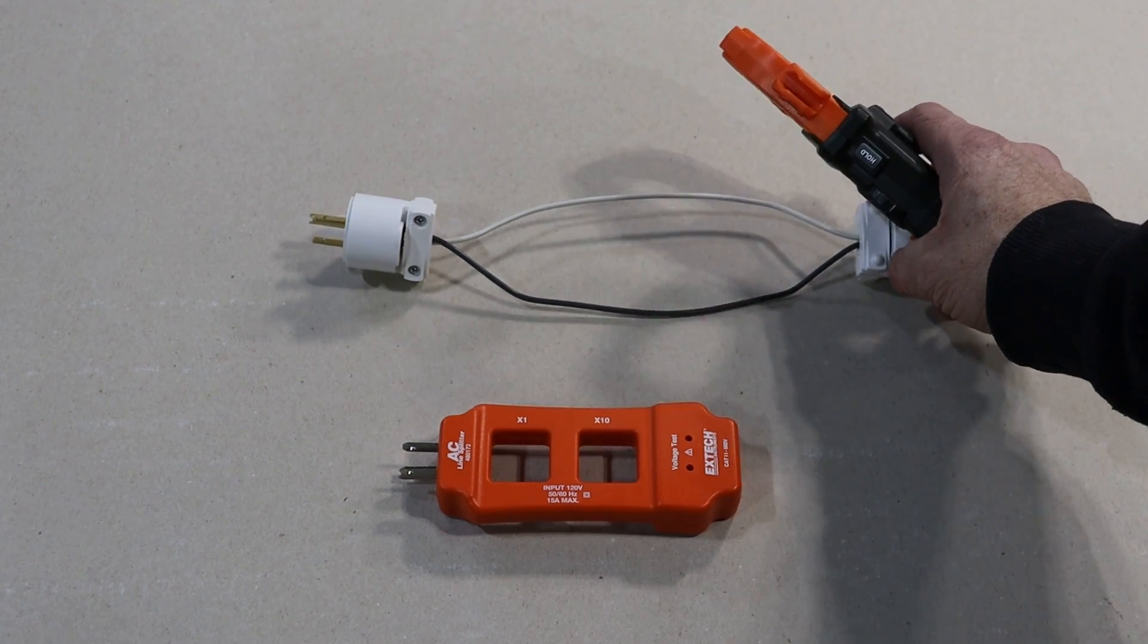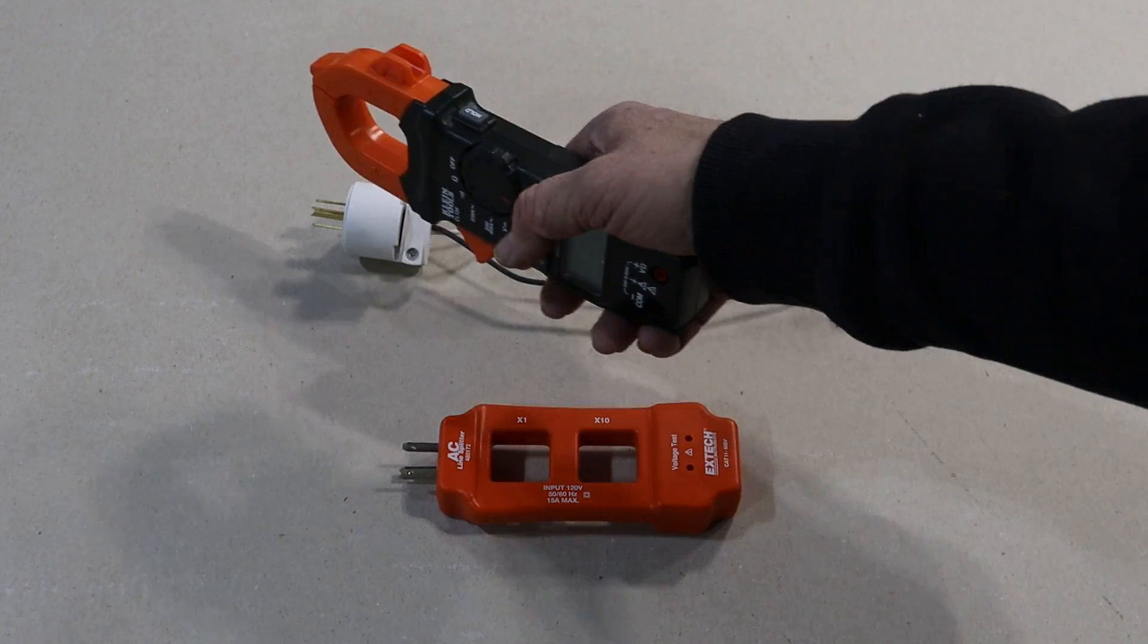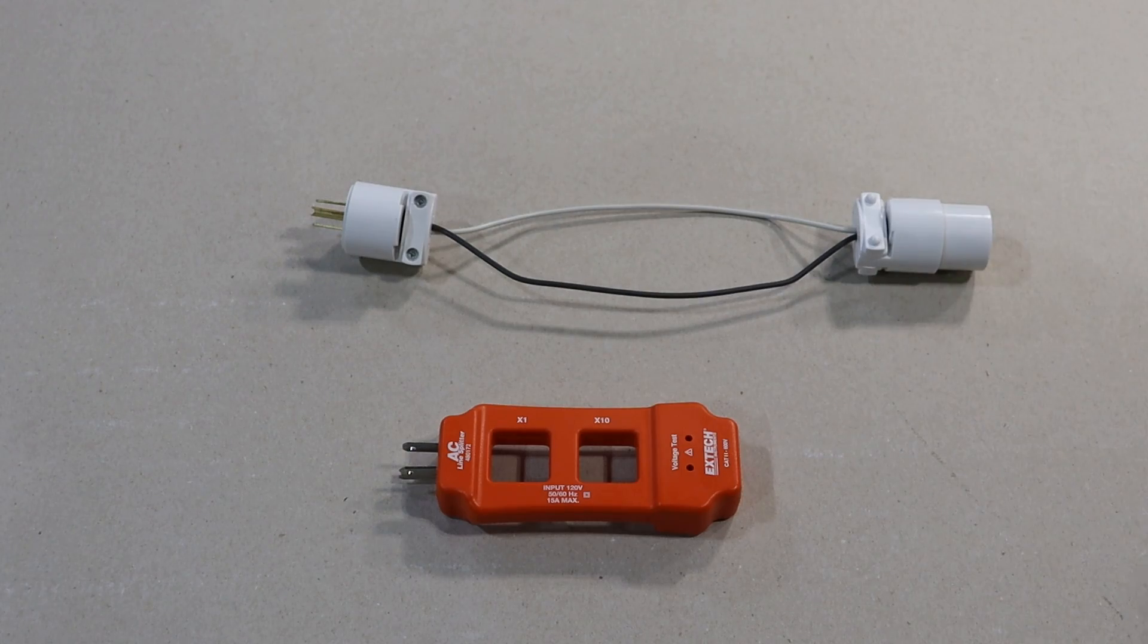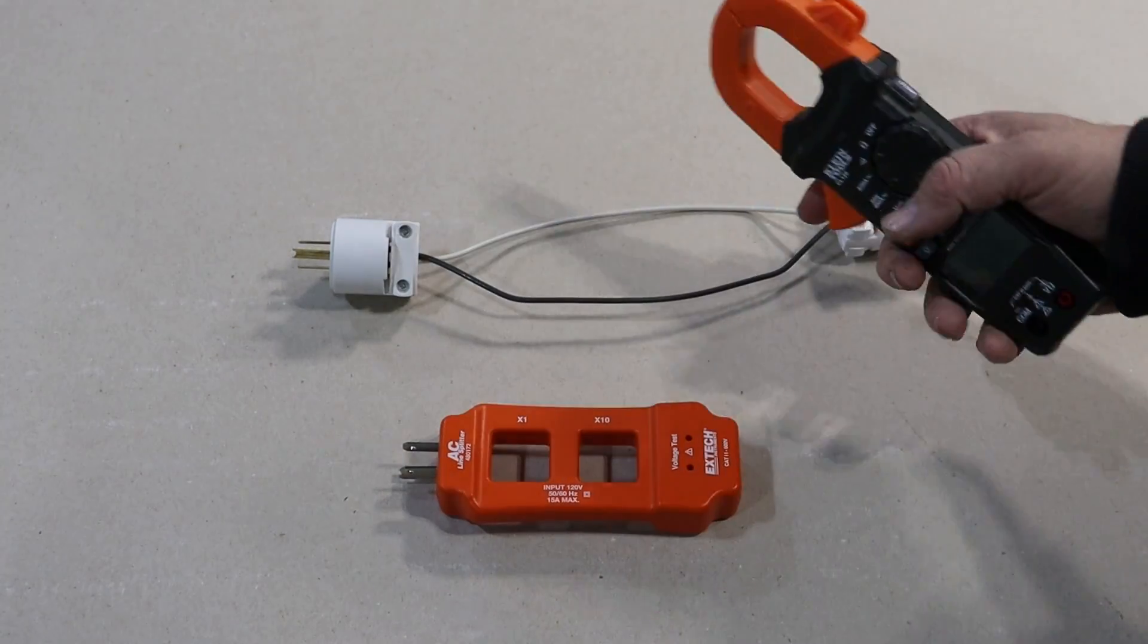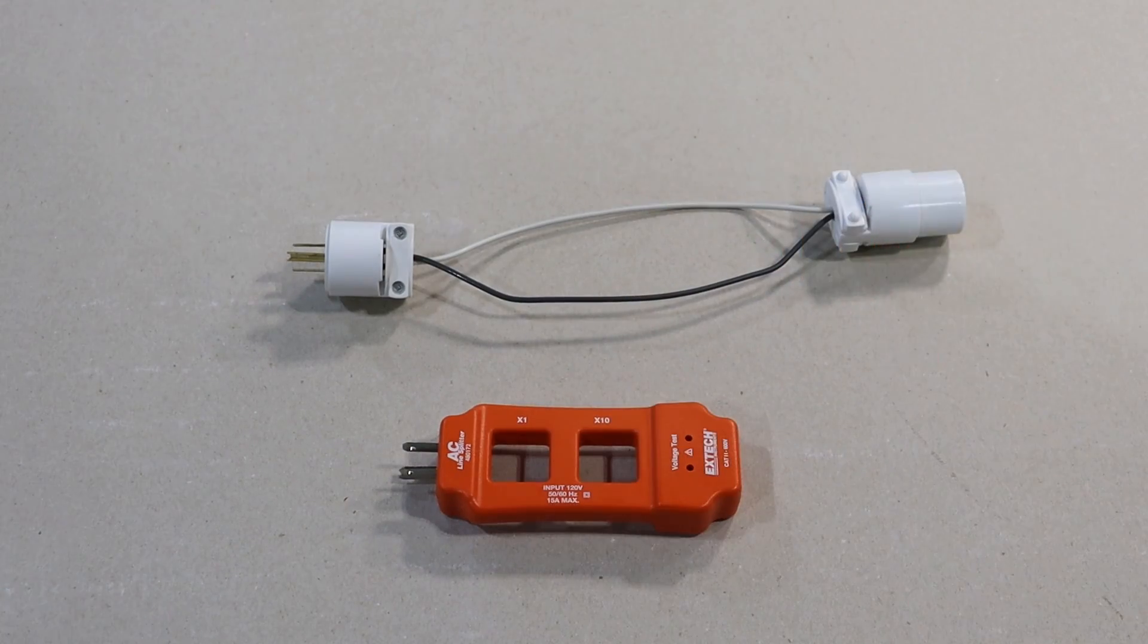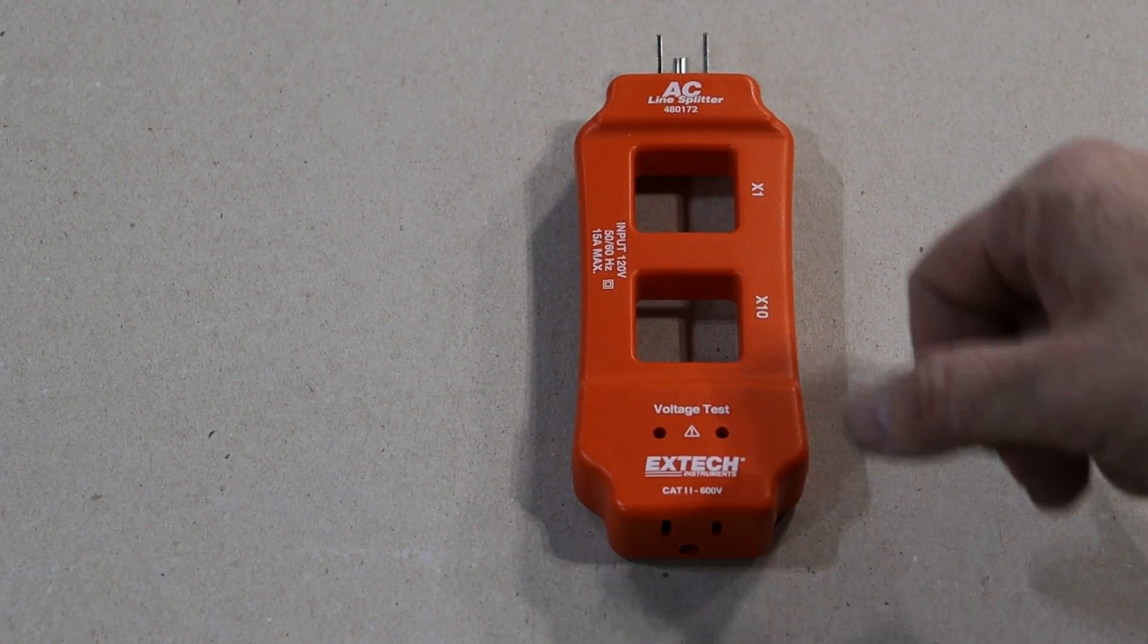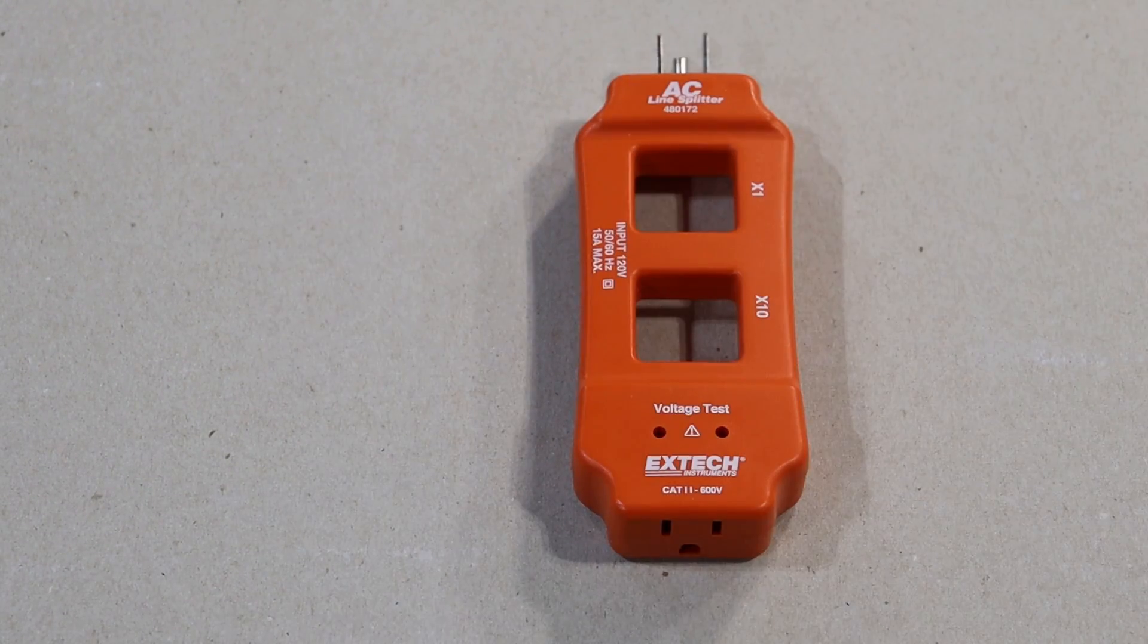So what I did is I made a little homemade line splitter to where I'm going to be able to plug one side into an extension cord, the other side will get plugged into the jackhammer, and then I can use my clamp to clamp around the wires and measure the amperage. I will be using the line splitter to test voltage though, and so you can just put a probe in each one of these holes here and measure the voltage.